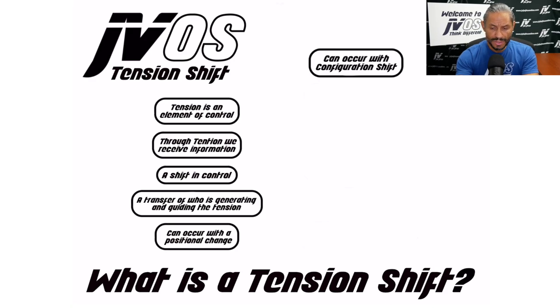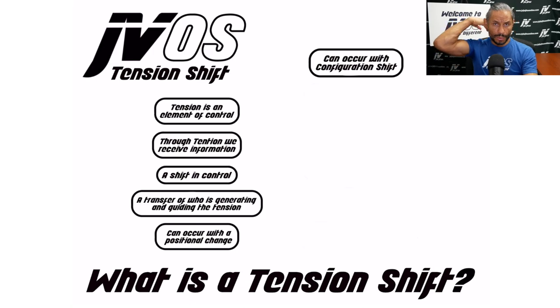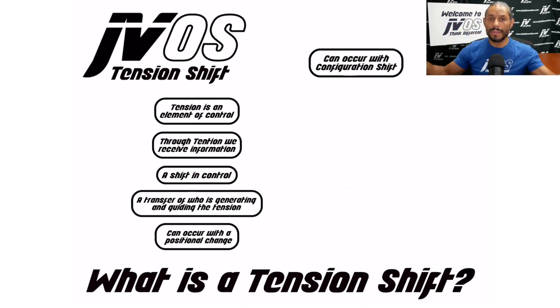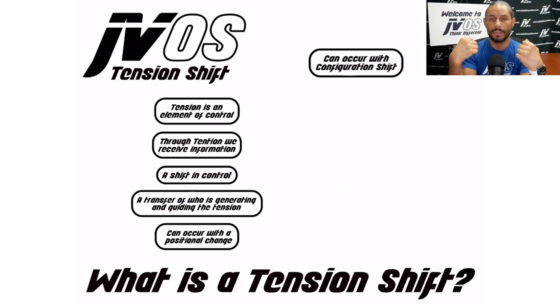Tension shifts can also occur with a configuration shift. Think of yourself in side mount: the opponent is underneath your neck, underneath your arm, and you are basically hugging the opponent from the bottom.